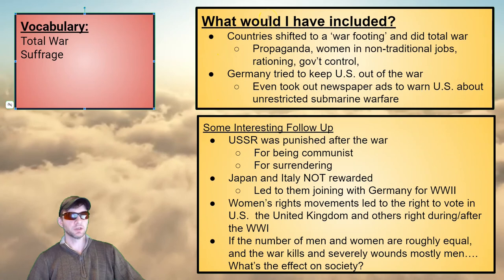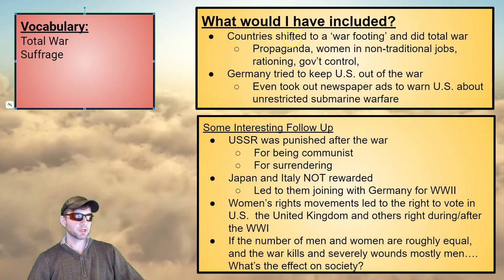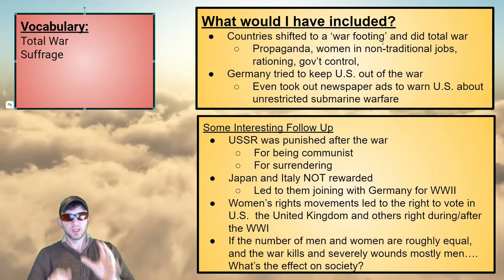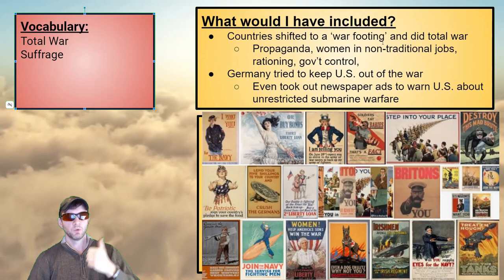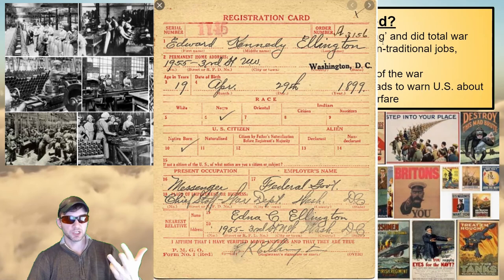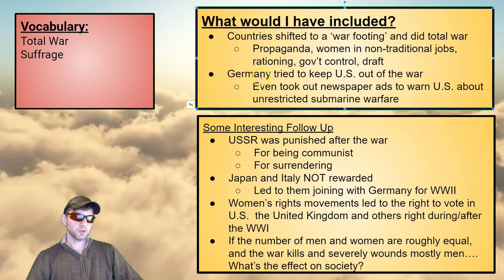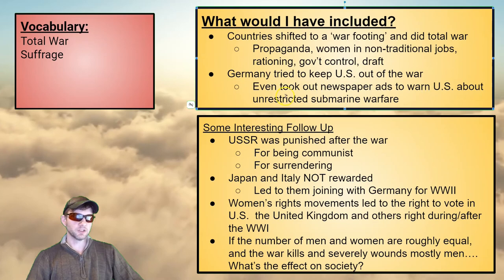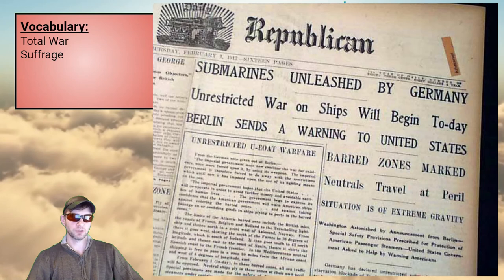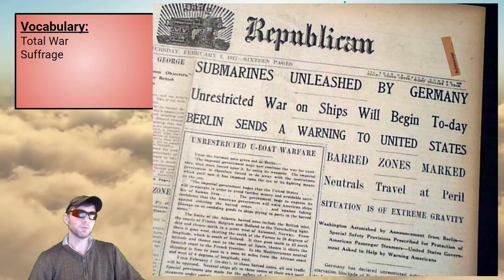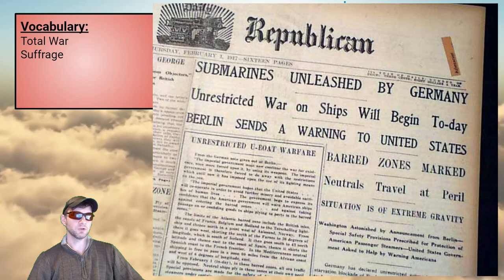What would I have included? I would have found a way to put in how countries went to total war — shifting to a war footing — and how home life really changed: propaganda, women moving into non-traditional jobs, conscription, rationing, and government control. Serious changes to society worthy of talking about. Germany really tried to keep the US out of the war — they even took out newspaper ads warning Americans not to go on boats during unrestricted submarine warfare.